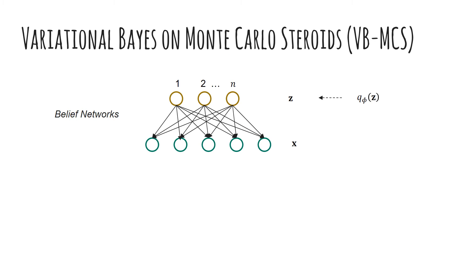We also develop a black box learning algorithm for belief networks called variational Bayes on Monte Carlo steroids, or VB-MCS in short, that incorporates random projections within the variational Bayes framework. Given a belief network with n latent units, out of which k are constrained, the high-level working of the algorithm is as follows.